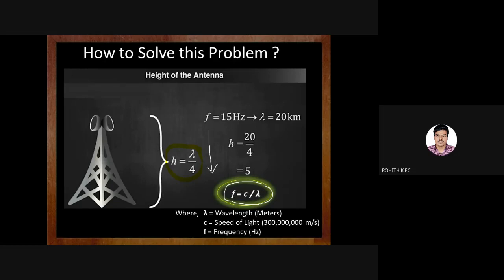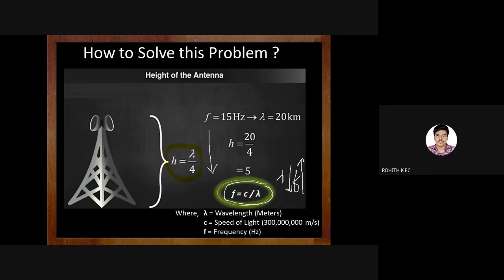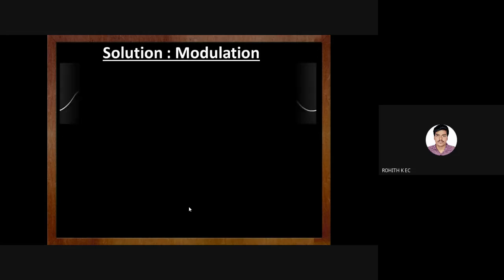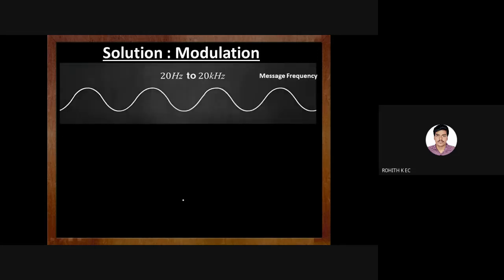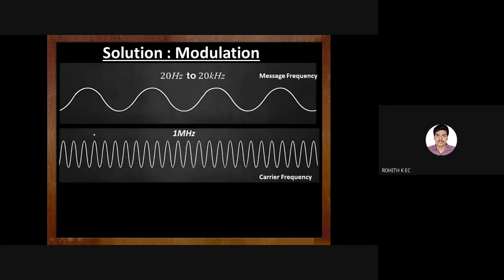Lambda is inversely proportional to frequency. Therefore, to decrease λ I must increase frequency. When I increase frequency, λ decreases because c — the speed of light — is constant. The technique or method I can adopt for increasing the frequency is referred to as modulation.